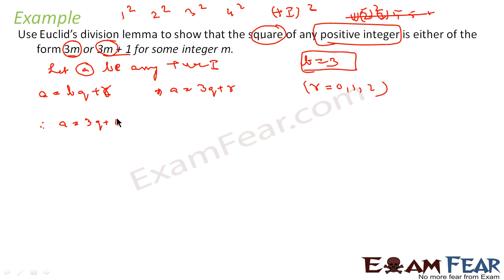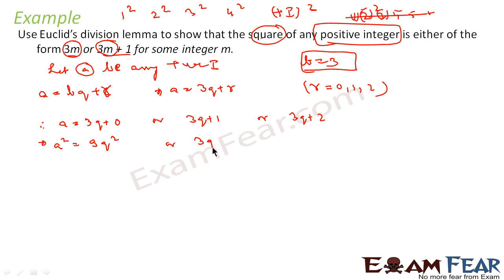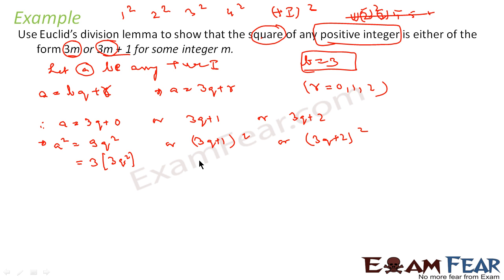Therefore a can be 3q, or 3q plus 1, or 3q plus 2 — three values of a. Now we are talking about a² because the question says square of positive integer. So a² equals 9q², or (3q+1)², or (3q+2)². This 9q², since the question says 3m or 3m plus 1, I can say this is nothing but 3 into 3q².